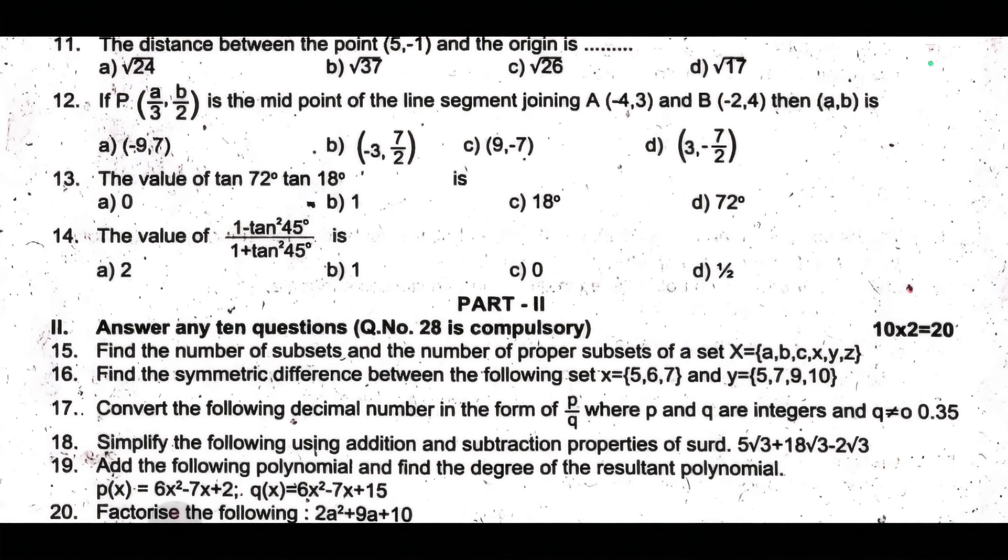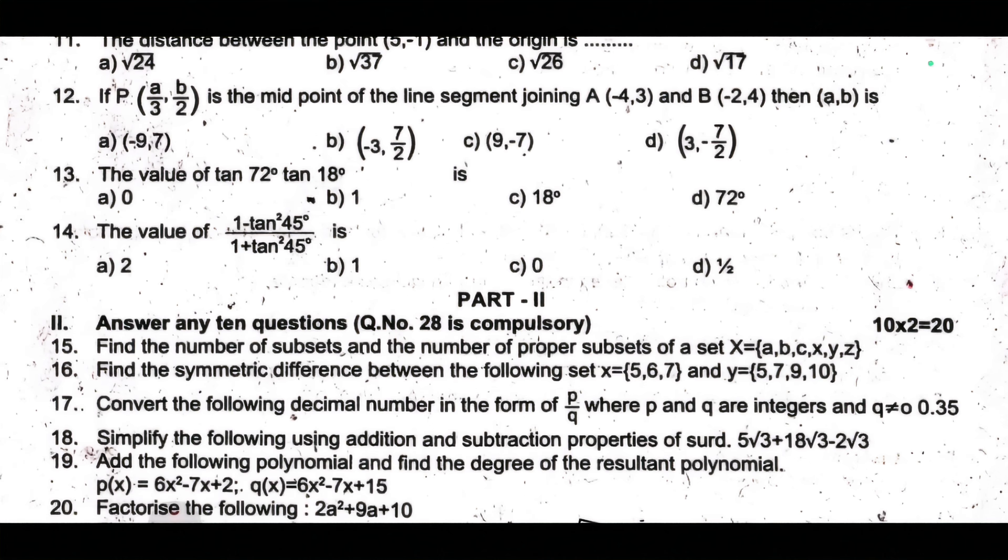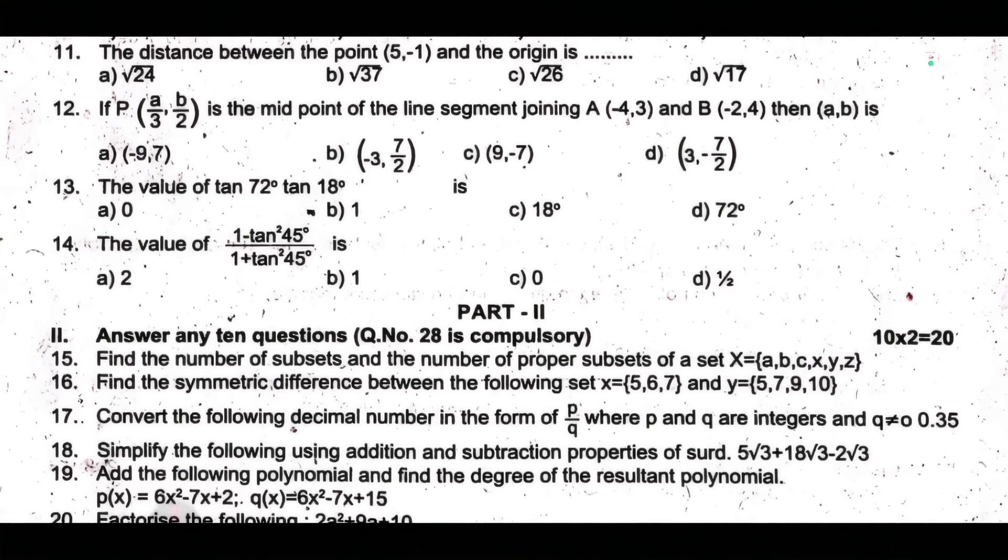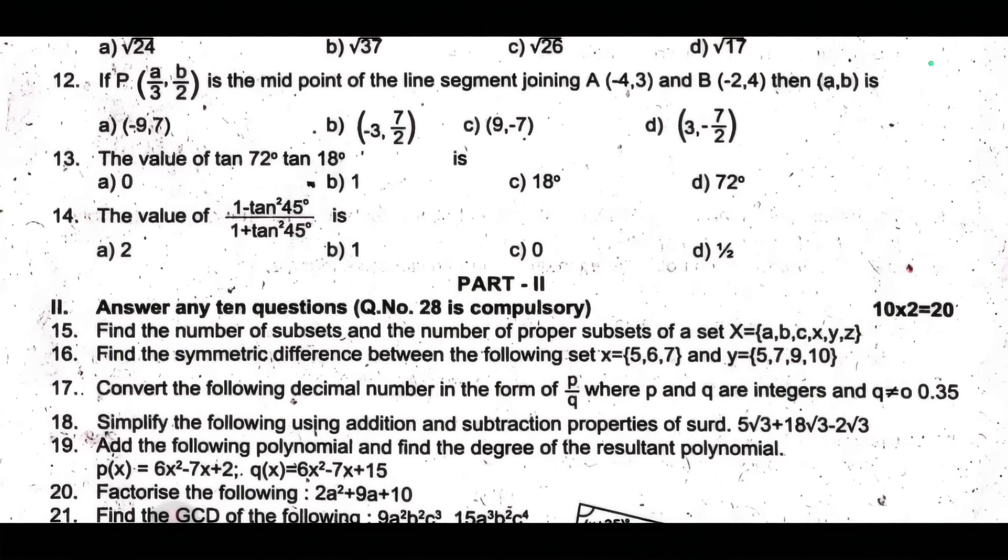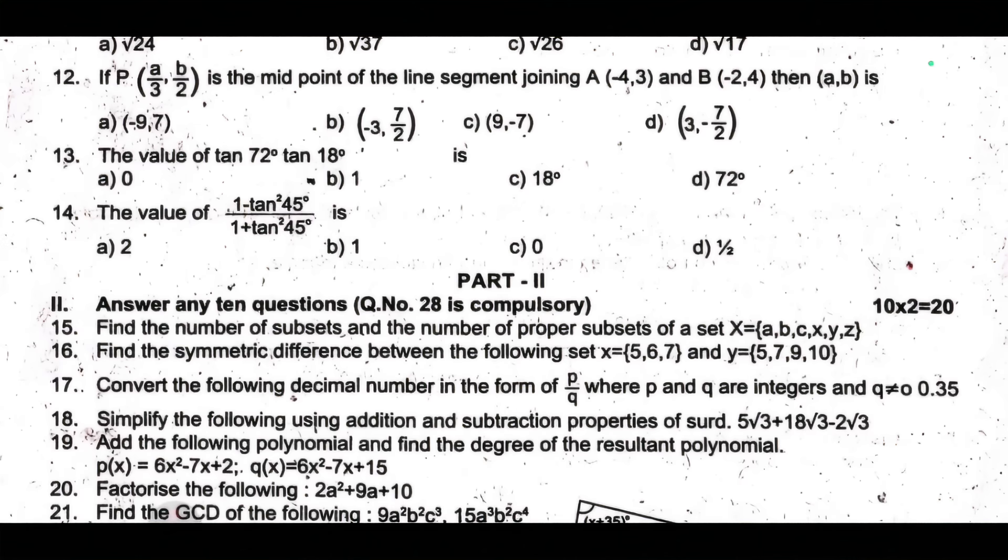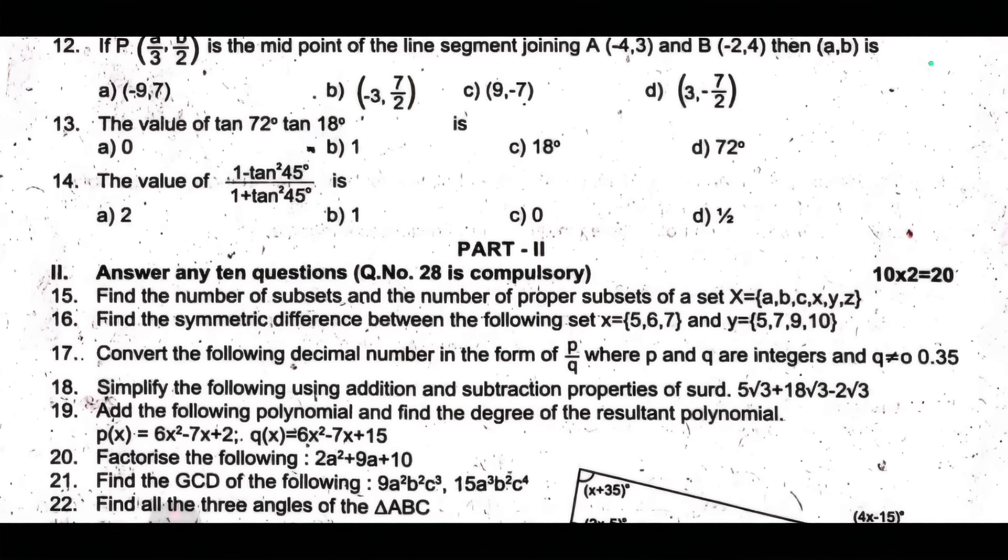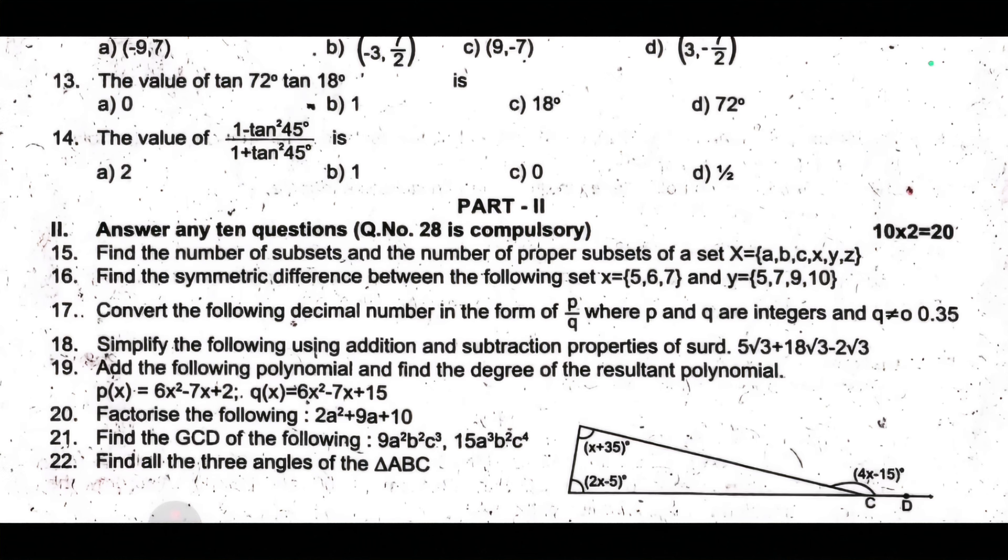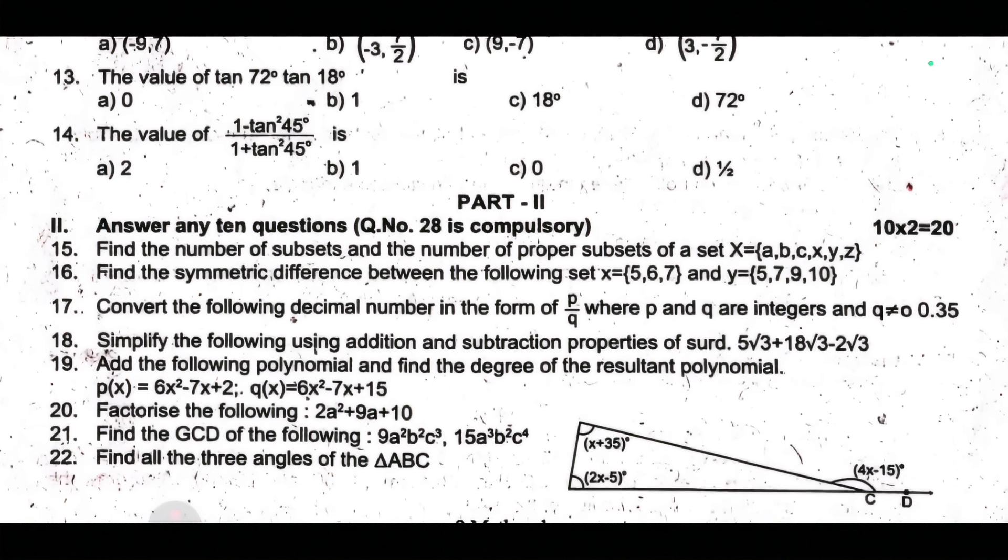So now Part 2. Fifteenth one, find the number of subsets of the set X equal to {a, b, c, x, y, z}. Sixteenth one, find the symmetric difference between the following set X equal to {5, 6, 7} and Y equal to {5, 6, 9, 10}.